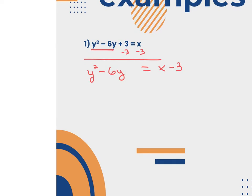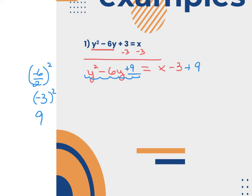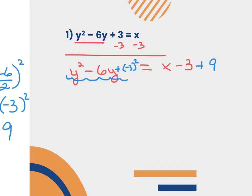To complete the square on the left side, I need to fill in the blank space. Check to see if there's a number in front of y squared — there's not. So I take the b term, which is negative 6, divide it by 2, and square it: negative 3 squared is 9. I'm going to add 9 to both sides. I'll write it in the blank as plus negative 3 squared, because that helps when factoring the perfect square trinomial.